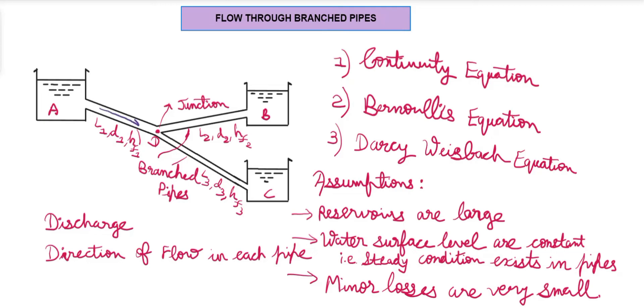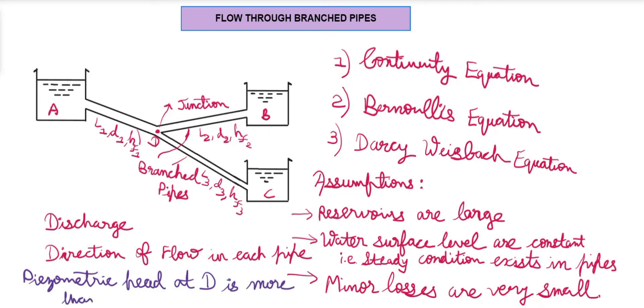Talking about the direction of flow — it is clearly visible that the flow goes from reservoir A to junction D, and then from D to C. But for D to B, we are not sure whether flow goes from D to B or from reservoir B to D. We assume the flow goes from junction D to reservoir B. This is only possible when the piezometric head at junction D — that is, P/ρg + Z at D — is greater than the piezometric head at B. Only then will flow take place from junction D to reservoir B.